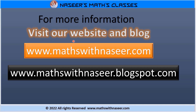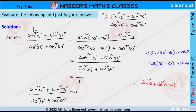For more information visit our website www.mathswithnasir.com and blog www.mathswithnasir.blogspot.com. Now we are going to solve page number 294, chapter 11, Trigonometry — evaluate the following and justify your answer. First one: given that sin square 15 degrees plus sin square 75 degrees divided by cos square 36 degrees plus cos square 54 degrees.